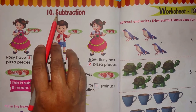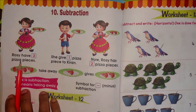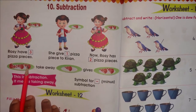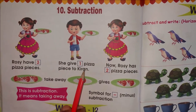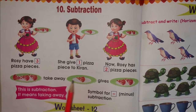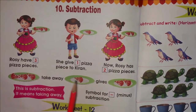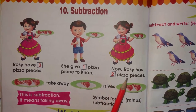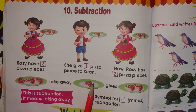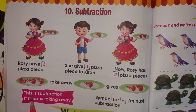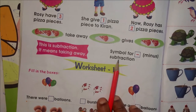Lesson number 10 — Subtraction: S-U-B-T-R-A-C-T-I-O-N. Now look at the picture, children. Rosie has three pieces of pizza: 1, 2, 3. She gave one piece to Kiran — take away one piece from that plate and give it to Kiran. Now Rosie has two pizza pieces. First she had three, she gave one to Kiran, so now two pizza pieces are left over. This is subtraction — it means taking away. The symbol for subtraction is minus.